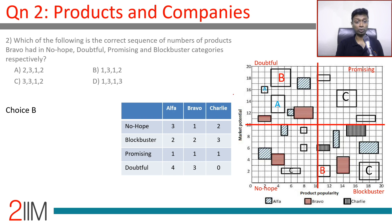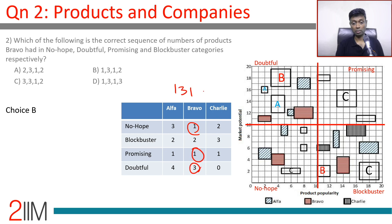Question: Which is the correct sequence of number of products for Bravo — No Hope, Doubtful, Promising, Blockbuster? Bravo: No Hope = 1, Doubtful = 3, Promising = 1, Blockbuster = 2. That gives the sequence 1, 3, 1, 2 — Choice B.